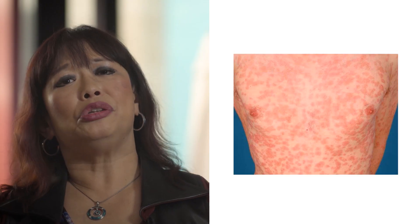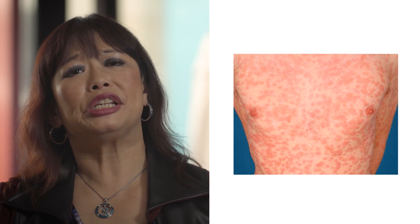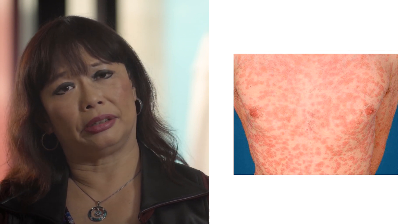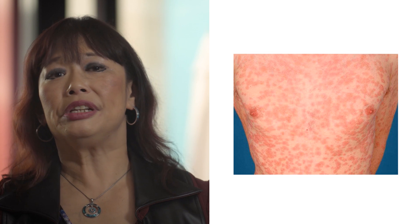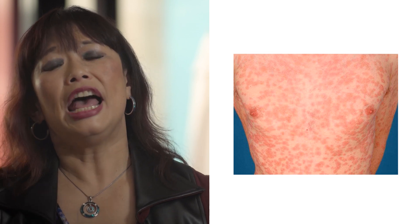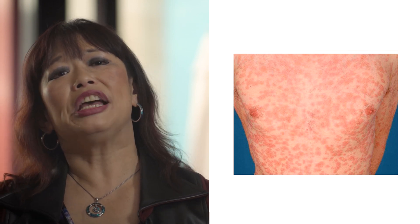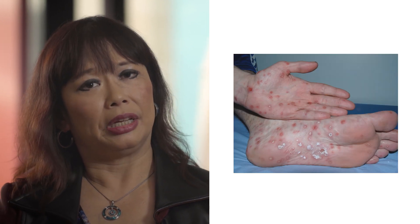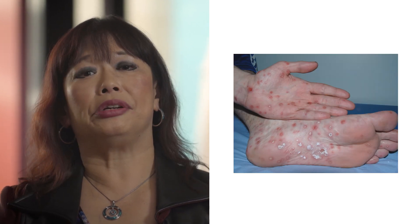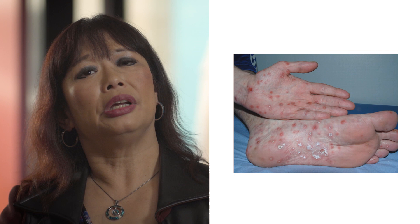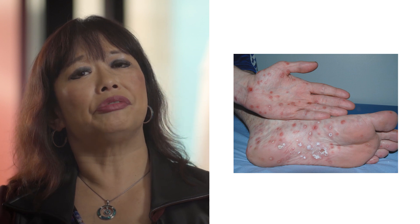Secondary syphilis usually occurs 3 to 6 weeks after a primary chancre. It involves a rash in 75% to 90% of cases, and the rash affects the body, the palms, and the soles of the feet. It is easily confused with drug eruptions, pityriasis rosea, or guttate psoriasis. It is important to remember it can mimic any rash.